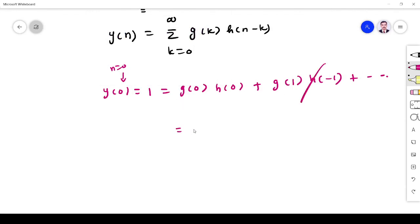So g is 0. 1, g is 0, h 0 is 1. This implies g 0 is 1.